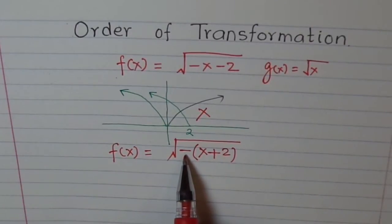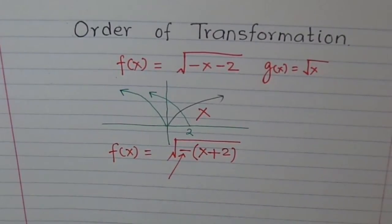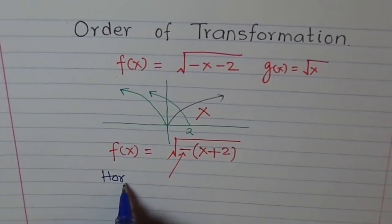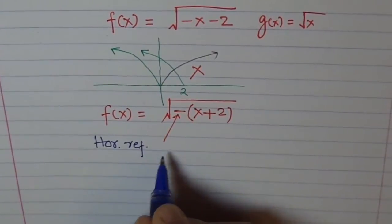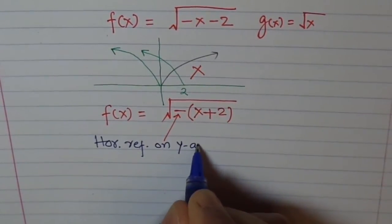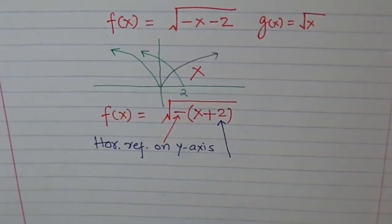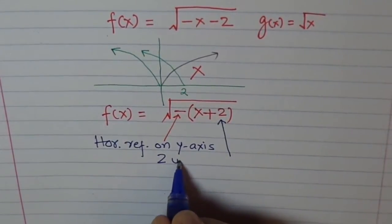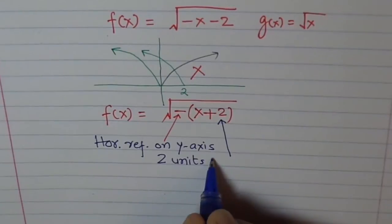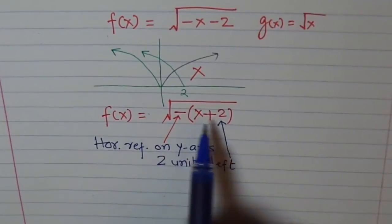Transformation is reflect on y-axis. Horizontally reflect. This one. Means horizontal reflection on y-axis. And what does this mean? This means translate two units to left. Two units to left. Remember, this is within the function square root x, not outside.